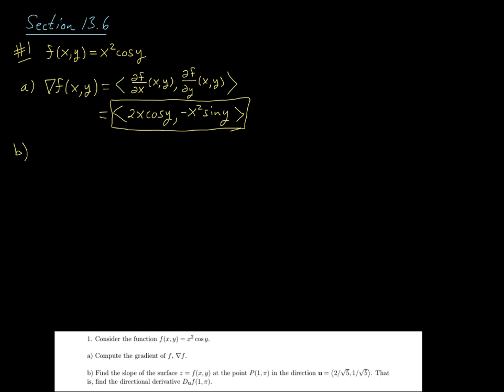The big takeaway from the intro video was that the directional derivative of our function at a point (a,b) in the direction of u could be computed using this gradient vector where we evaluate it at the point (a,b) and then we take the dot product of that vector with our direction vector u.